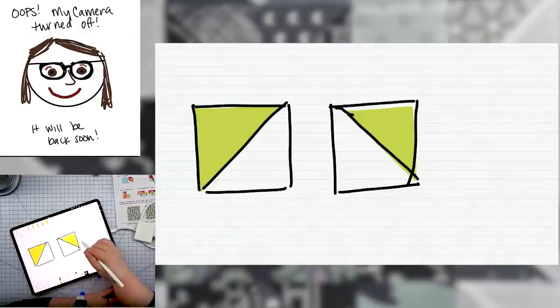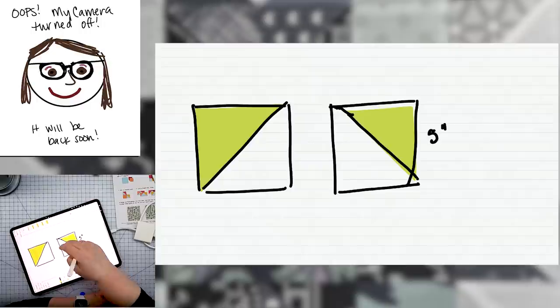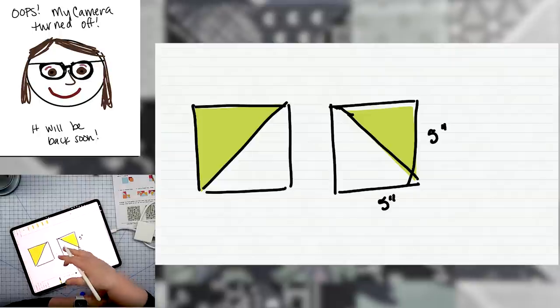So let's go back to our half square triangle friends for just one second. If we were going to make our flying goose unit using these squares, then we would cut a five inch green square, our leftover charm packs. And then we would cut another five inch square from scraps or background.